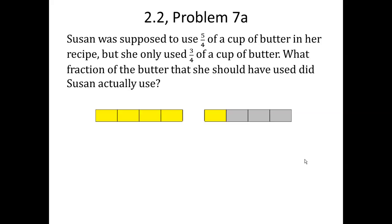Now, what we've got here on the picture is a representation of 5 fourths of a cup of butter. On the left hand side, we have a representation of one stick of butter divided up into four equal sized parts. And then on the right hand side, we have 1 fourth of another cup of butter.